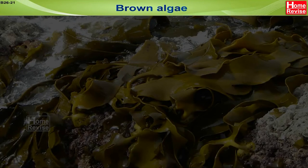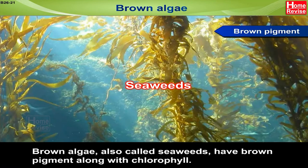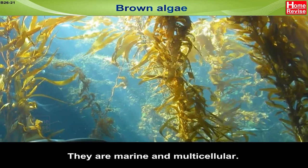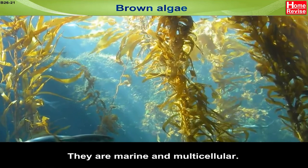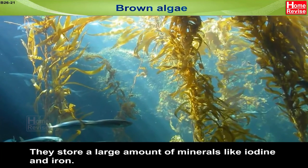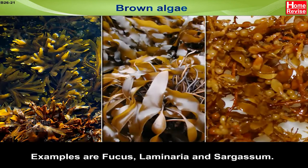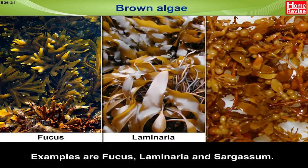Brown algae, also called seaweeds, have brown pigment along with chlorophyll. They are marine and multicellular. They store a large amount of minerals like iodine and iron. Examples are Fucus, Laminaria and Sargassum.